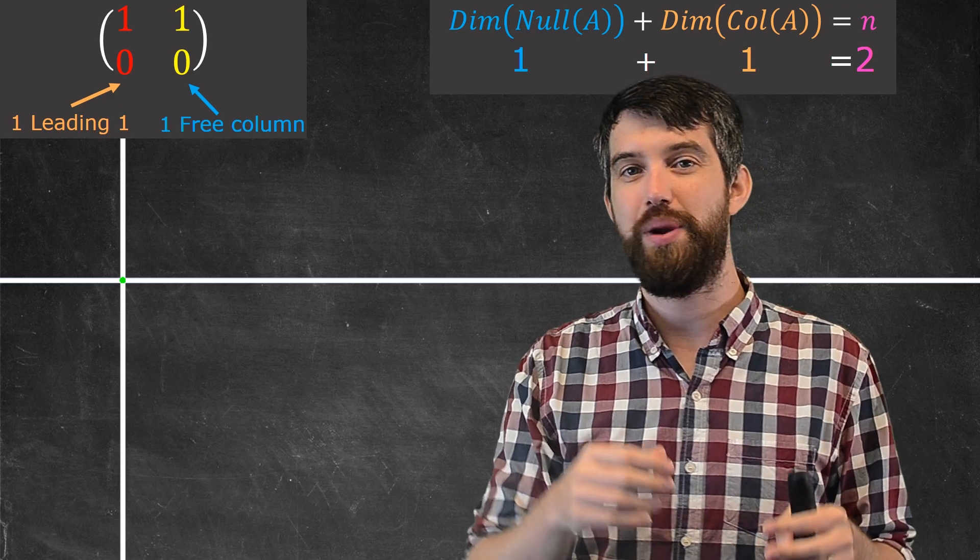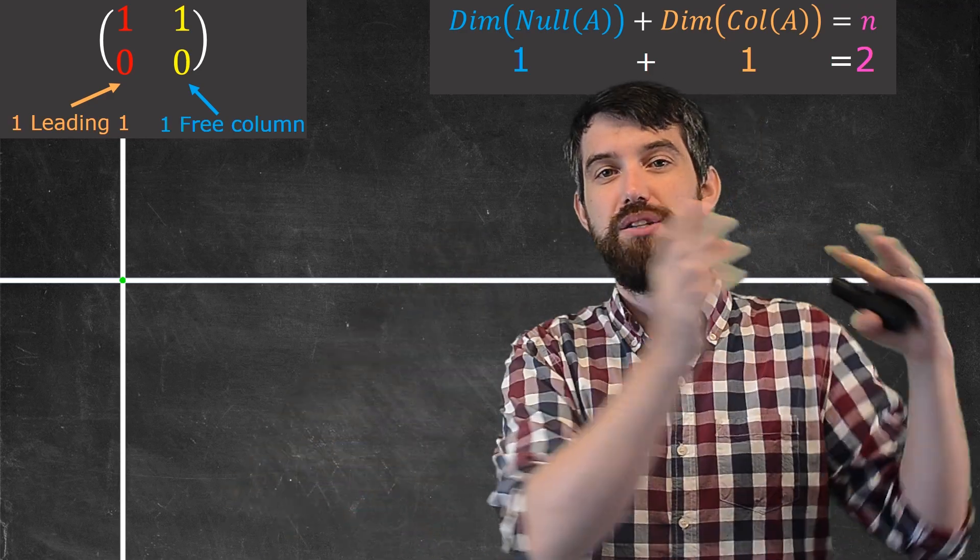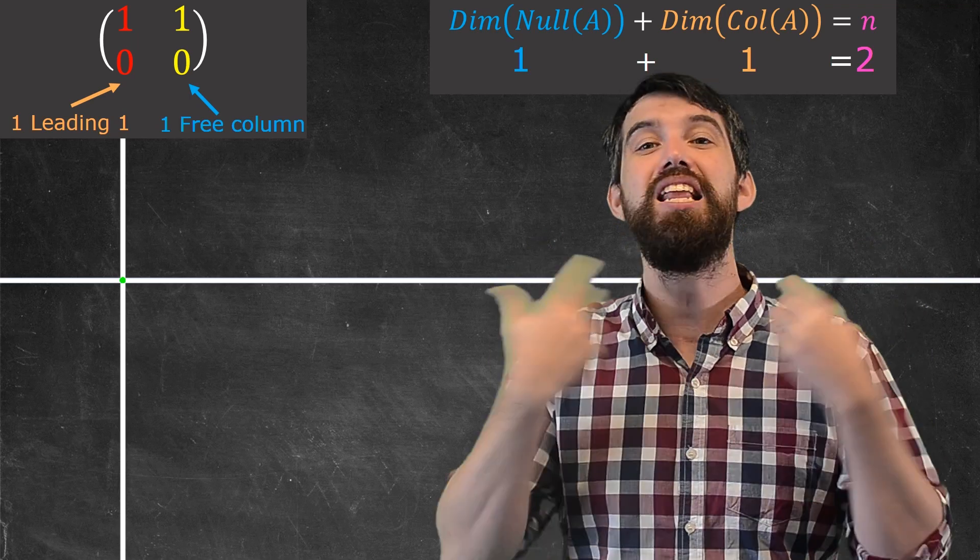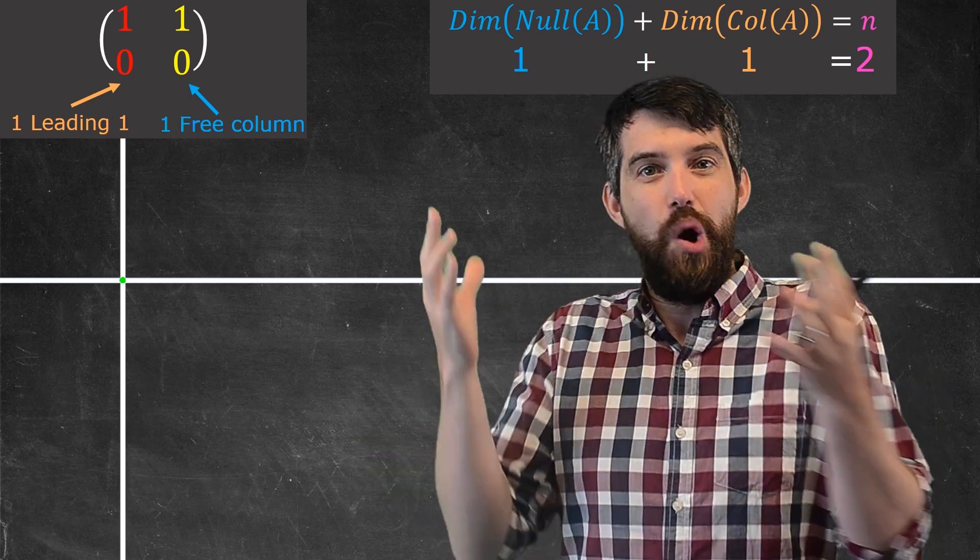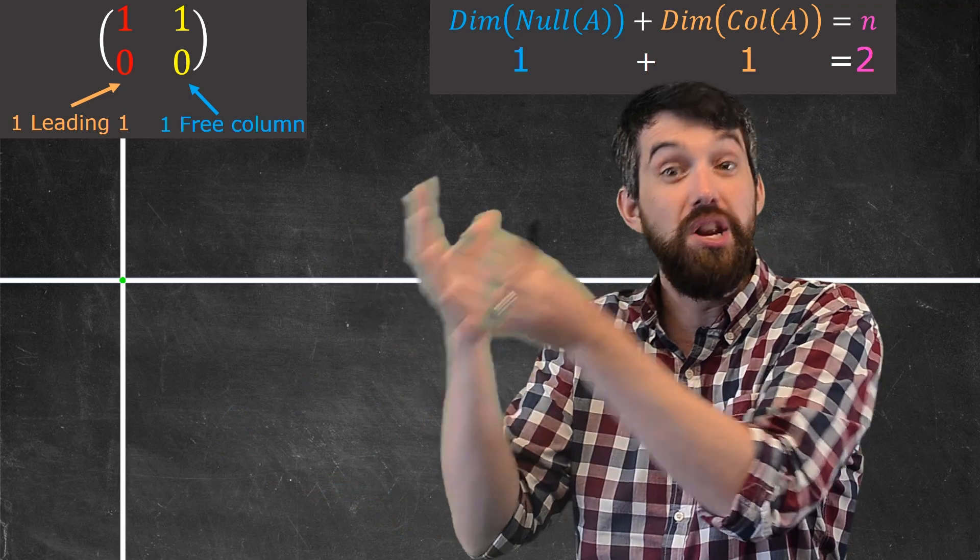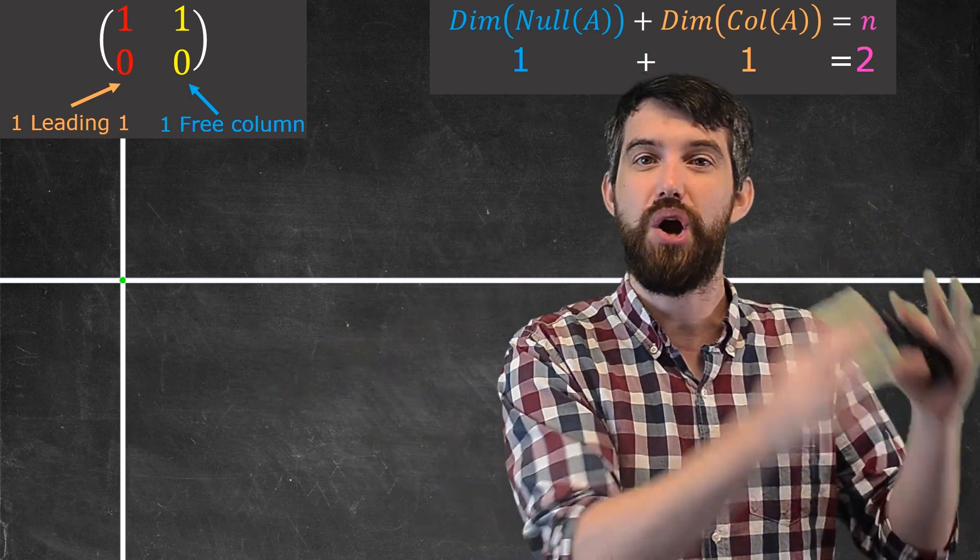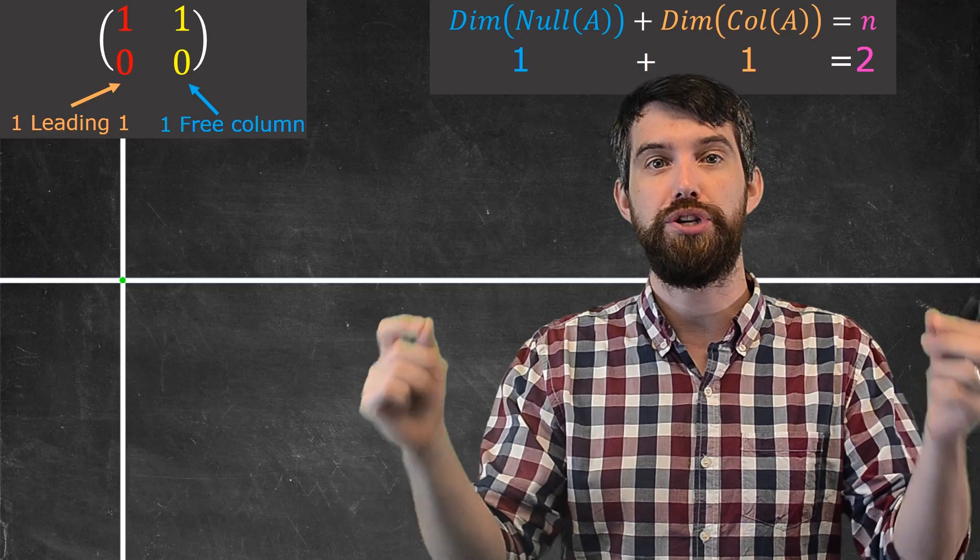So we've seen that in this example we have a transformation from two-dimensional space to two-dimensional space, and then we get this sort of splitting where the n equal to 2 here splits where one of the dimensions goes into the null space, the stuff that's killed off, and one of the dimensions goes into the column space, the target, and the sum of those is just going to be equal to 2.